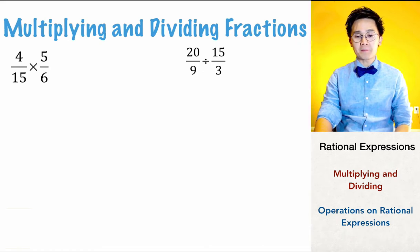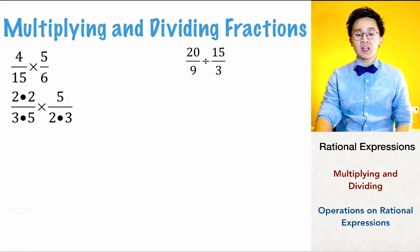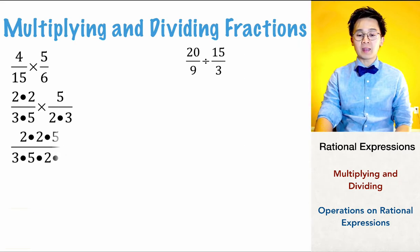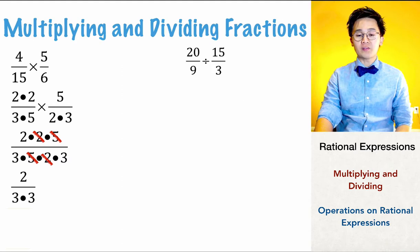Notice that 4, 15, and 6 are composite numbers which we can factor using prime factorization: 4 becomes 2 times 2, 15 is 3 times 5, and 6 is 2 times 3. By combining and expanding, we can cancel common terms — 2 and 2, and 5 and 5 — leaving us with 2 over 3 times 3. So the product of 4 over 15 times 5 over 6 is 2 over 9.